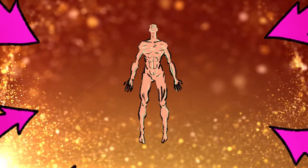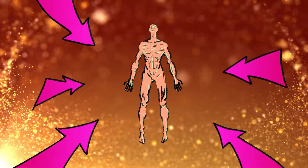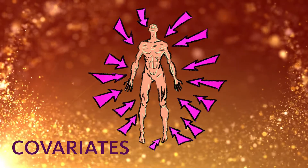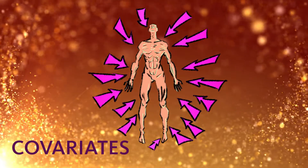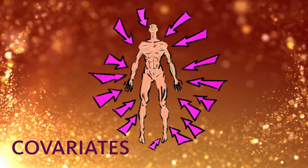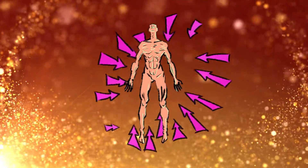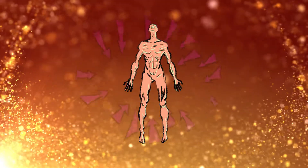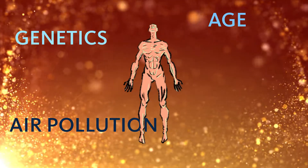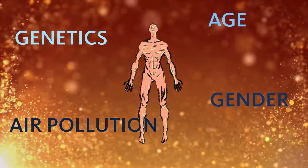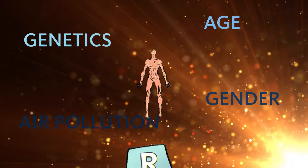Finally, you would have to consider all the things called covariates that impact your study and change the relationship between the independent and dependent variables. In this example, these covariates could be genetics, air pollution, age, and gender.